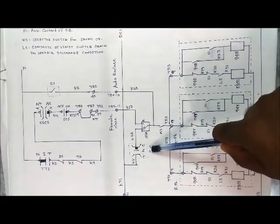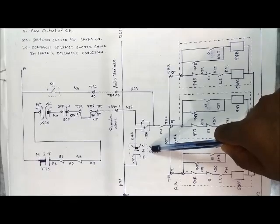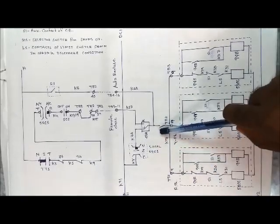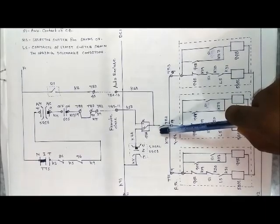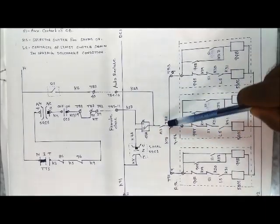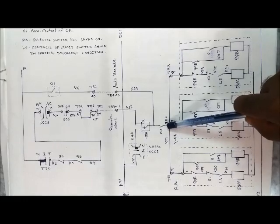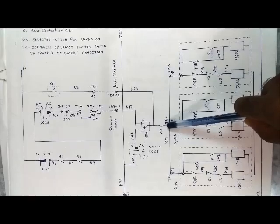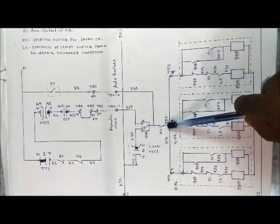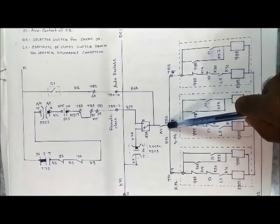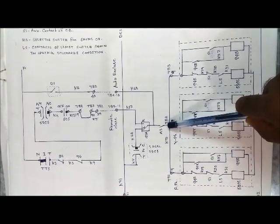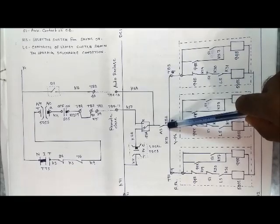TNC is the local control switch of the circuit breaker — that is, trip-neutral-close control switch. 43A is the local/remote selector switch. A3 is the contact for SF6 low gas pressure lockout. This contact is shown under lockout condition: if the gas pressure is below 7.8 bars, this contact will be in the NO position.